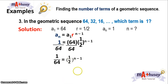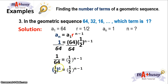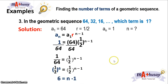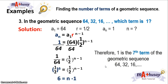We have 1 over 64 on the left side of the equation equals 1 half raised to n minus 1. To solve for n, we have to rewrite 1 over 64 into exponential form with the base 1 half. So, 1 half raised to 6 is just the same as 1 over 64, because 1 raised to 6 is still 1, but 2 raised to 6 is 64. So, 1 over 64 can be written as 1 half to the sixth power. Now that we have the same base, we take the exponent: 6 equals n minus 1. Solving for n, we have n equal to 7, which means that 1 is the seventh term of the geometric sequence 64, 32, 16, and so on.